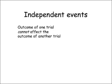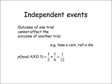Looking now at independent events. An independent event is when the outcome of one trial cannot possibly affect the outcome of another trial — for example, tossing a coin or rolling a die, or indeed rolling two dice as we just looked at. When tossing a coin and rolling a die, the probability of getting a head is a half, and the probability of getting a 5 is 1 sixth. When you multiply them together you get 1 twelfth. That expresses the idea that it's harder to get both a head and a 5 — that's one outcome out of 12 possible outcomes. So AND means multiply in probability.